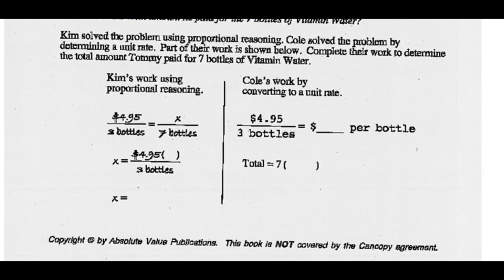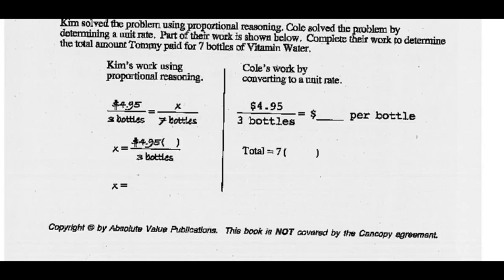Kim's work used proportional reasoning, and Cole's work was done by converting to a unit rate. So if we look at Kim's work, $4.95 for three bottles. There's a rate, dollars over bottles. Puts it in a proportion. How many dollars would he have to spend to get seven bottles? So he cross-multiplies, and he goes $4.95 times 7 would equal 3 times X. And you divide both sides by 3. And you get $4.95 times 7 divided by 3. That comes up to $11.55 total.